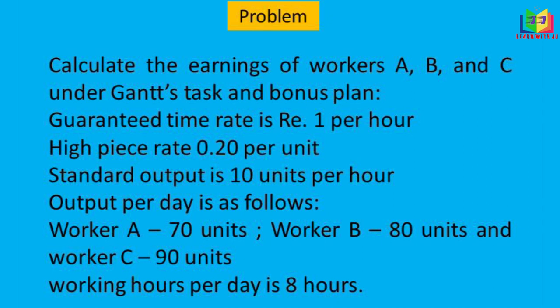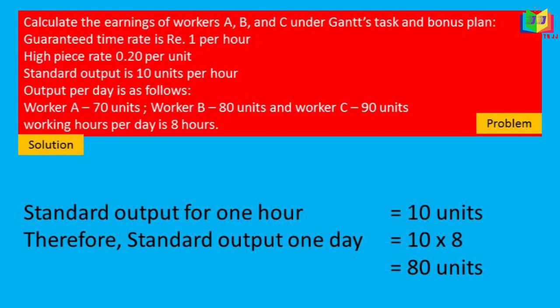In this problem, standard time is not given, so we use standard output to calculate the efficiency of the workers. The standard output per day is output per hour multiplied by normal working hours per day: 10 units per hour × 8 hours = 80 units per day.